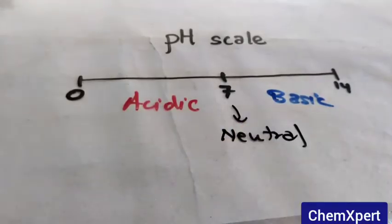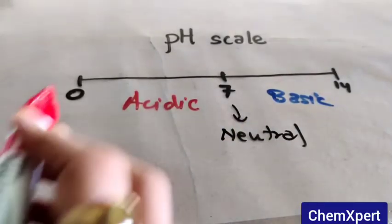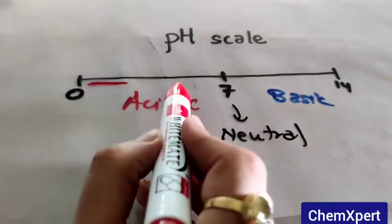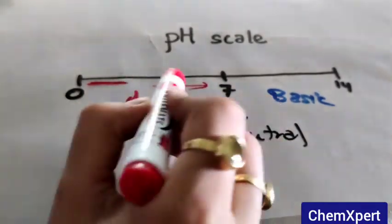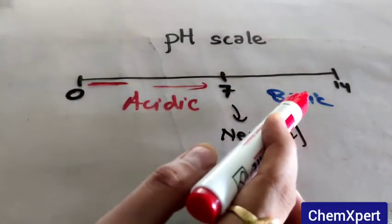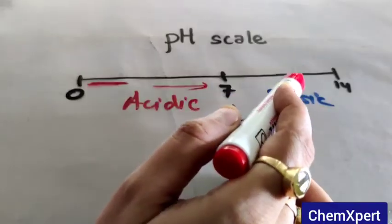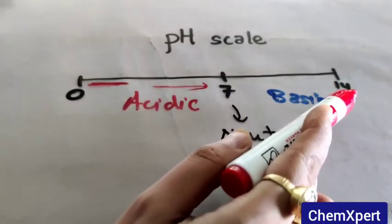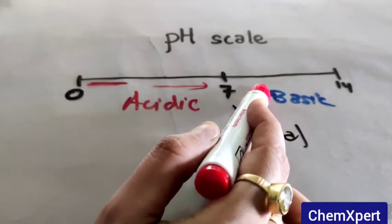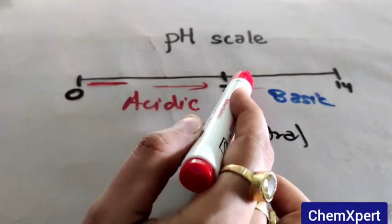If the pH value lies near to 0, then it is strongly acidic, and the range near 7 is the weakly acidic part. Similarly, values near 14, for example 10, 11, 13, 14, are strongly basic components, whereas if the pH value lies near to 7, like 7.5, 8, 9, they are considered weakly basic components.